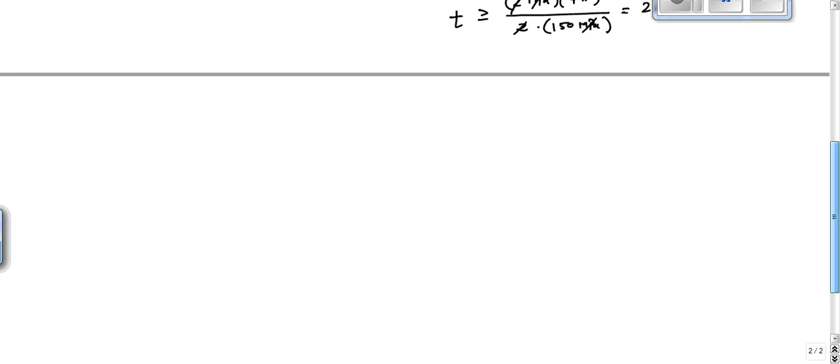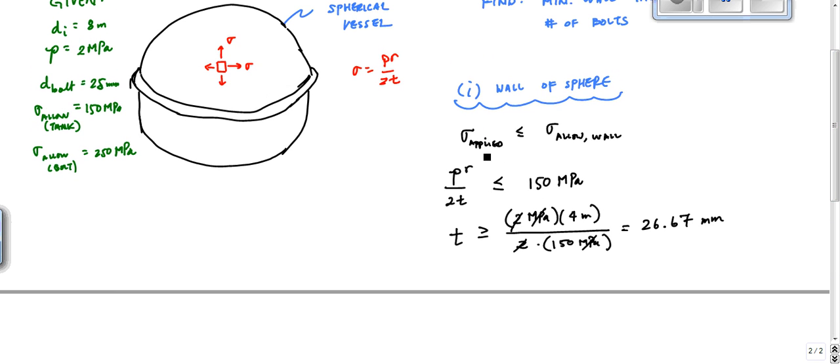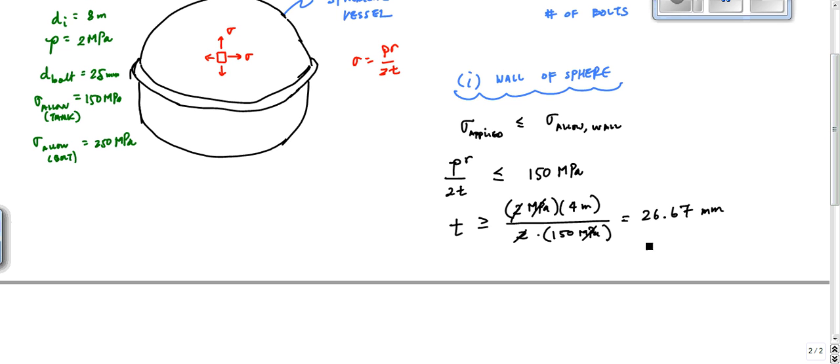But of course, it was easy only if you could recognize the design relationship right away, this basic design relationship. So T is greater, so you would choose something—if you're designing this, you would say maybe T use equal to 28 millimeters or 30 millimeters or something that the manufacturer makes, right?